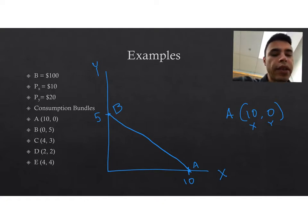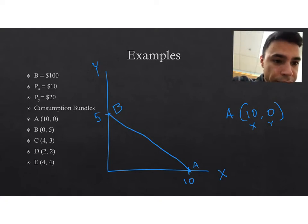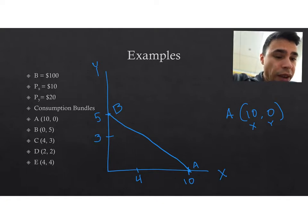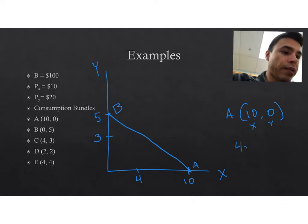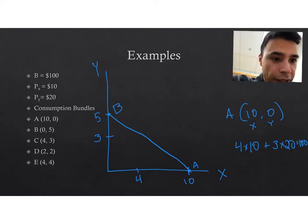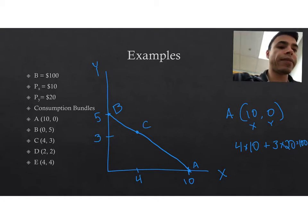What about point C? At point C we purchase 4 units of good X and 3 units of good Y. How much does that cost? Four units of good X at $10 each is $40, plus 3 units of good Y at $20 each is $60, bringing the total to exactly $100. So it's going to be exactly on the line — it's at the limit of what's affordable — and therefore it is part of the feasible set.